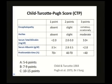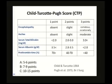These five parameters are each given one to three points, and the total value is calculated. They are then graded into three categories: Child-Turcotte-Pugh A, B, and C. This is a relatively old scoring system, but it is still valid in the field.